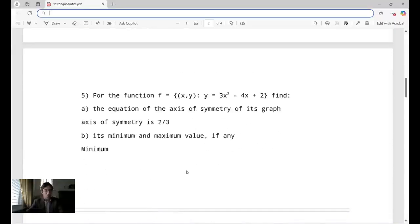Next we have, number five was correct. It says for the function f(x,y), y = 3x² - 4x + 2, find, there were two parts to this question. A, the equation of the axis of symmetry of its graph. So the student says axis of symmetry is 2/3 and it's the minimum value. Fair enough. I would have liked to see a little bit more why, but it's okay.